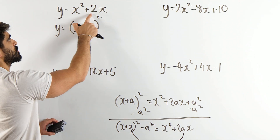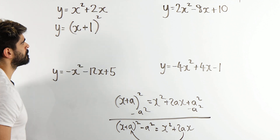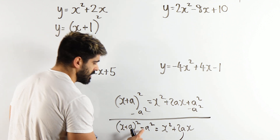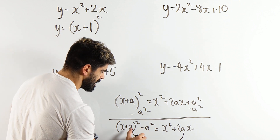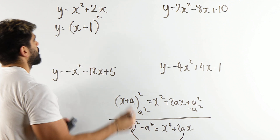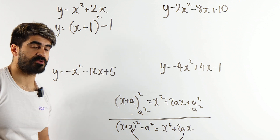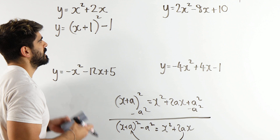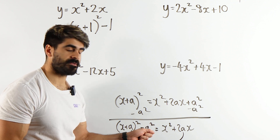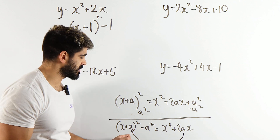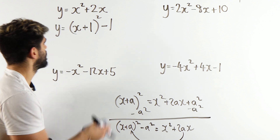We just divide the coefficient by 2. What's the coefficient of x here? It's 2. So we divide it by 2, which gives 1. Then all you do is minus that number squared — you minus this number squared, which is just 1. And that's the completed square form. Keep in mind, it's the subtraction of the number squared. There are no brackets or anything — you're just subtracting whatever that number is squared. Forget about the sign in front of it.